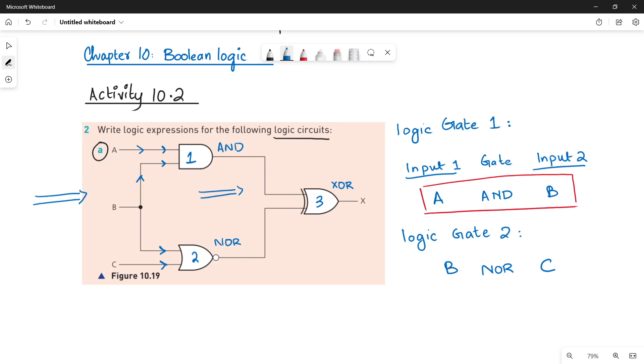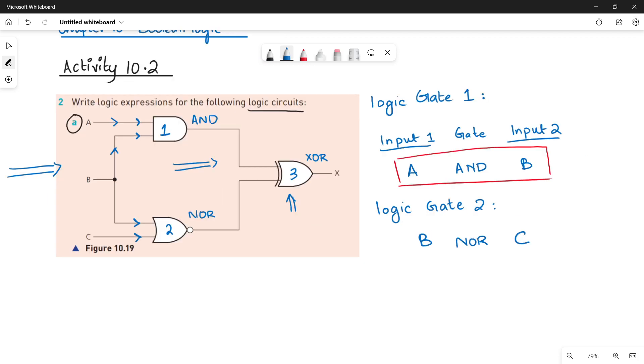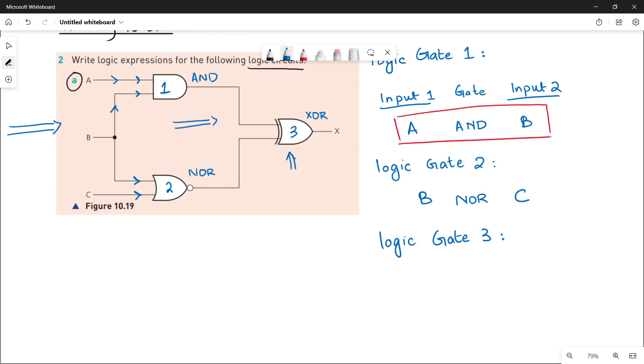Now the final logic gate that is giving you output X is your XOR gate. Or in other words, it is logic gate 3 that is giving you the final output. The expression for logic gate 3 will be written as it is a XOR function between two inputs. The first input is coming from logic gate 1.